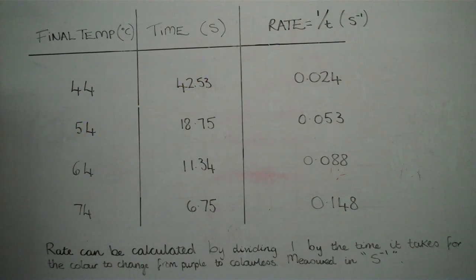Rate can be calculated by dividing 1 by the time it takes for the colour to change from purple to colourless, measured in s to the minus 1.